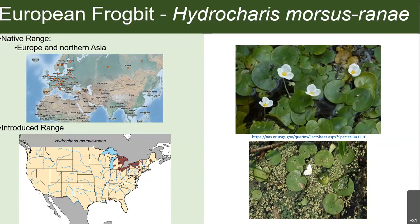If you look at that lower map, it is starting to move further into the Northeast. As Mitch mentioned in the beginning, it may be a lot more widespread than what's shown on this map in the lower Hudson region. We currently only know about three populations, so it's definitely really important that people start mapping this species.